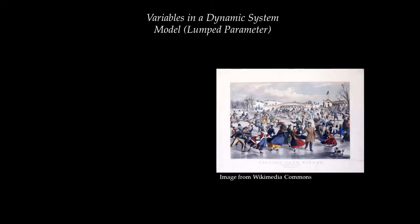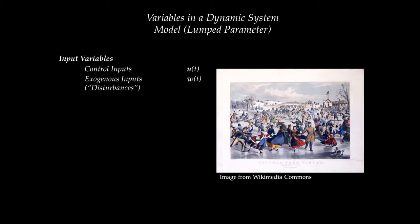In a dynamic system such as a person who is ice skating, the first kind of variable we need to think about is the input variable. There are two kinds: control inputs — the inputs that the ice skater exerts on the system to achieve a desired response — and exogenous inputs, sometimes known as disturbances, which the environment exerts on the system and which you have no control over.